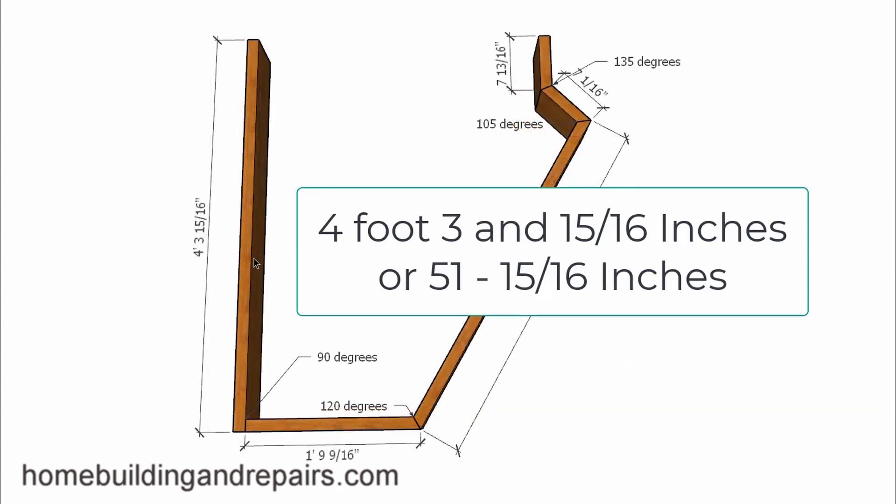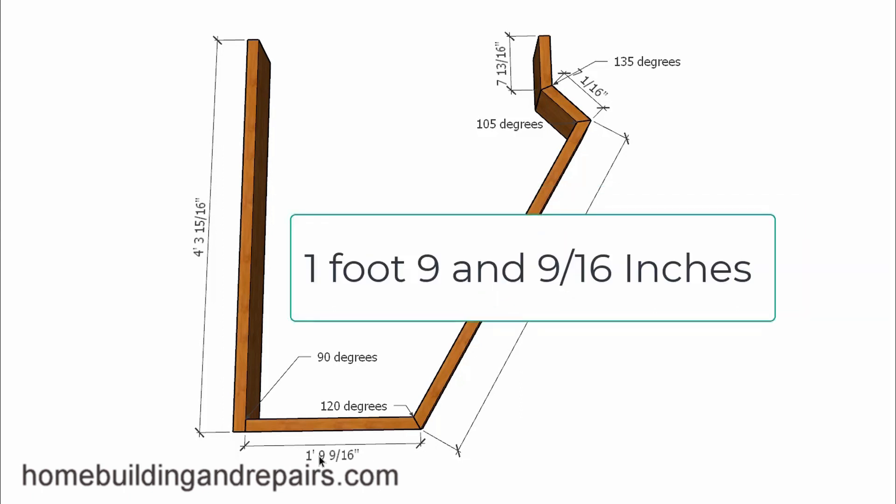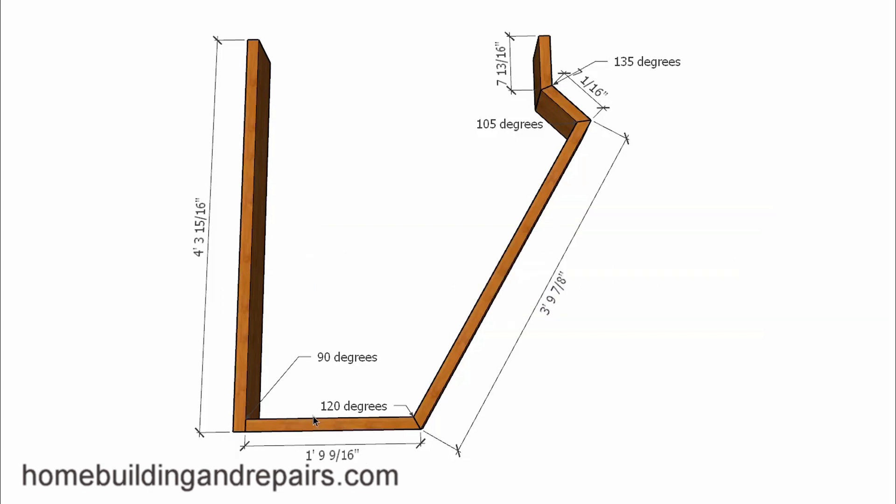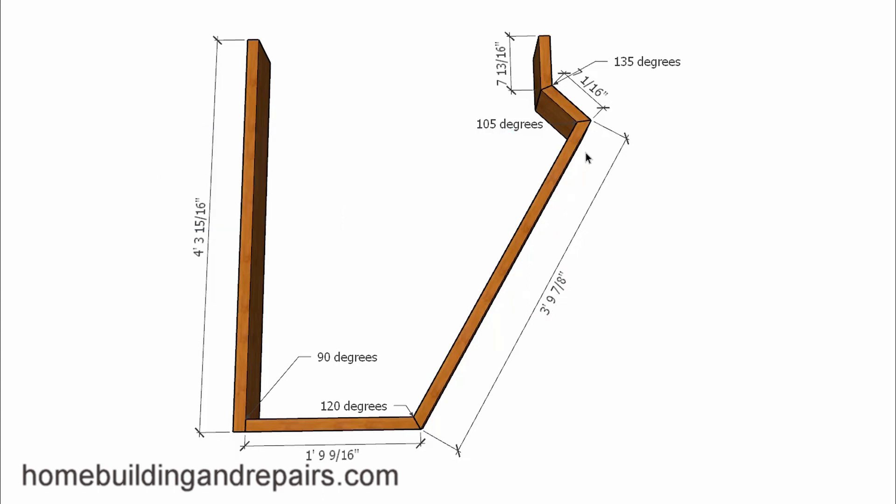For the next step, we will be using the same board 4 foot 3 and 15 sixteenths. However, over here we are going to be using 1 foot 9 and 9 sixteenths of an inch. And this board will have an angle at 120 degrees. However, the angle for this cut will be 30 degrees. And the next board here will be 3 foot 9 and 7 eighths of an inch, along with a 7 and 1 sixteenths inch board here. And that will be from the inside corner to the outside corner. And then this board here will be 7 and 13 sixteenths of an inch. And that will measure from here to here. And then the angle for this board here and this one will be 22 and a half degrees. And then the angle for this will be 37 and a half degrees.